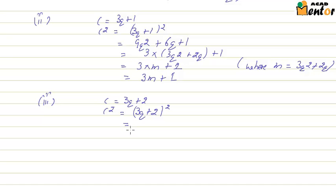Using the formula a plus b whole square, we will get 9q square plus 12q plus 2 square, which is 4.